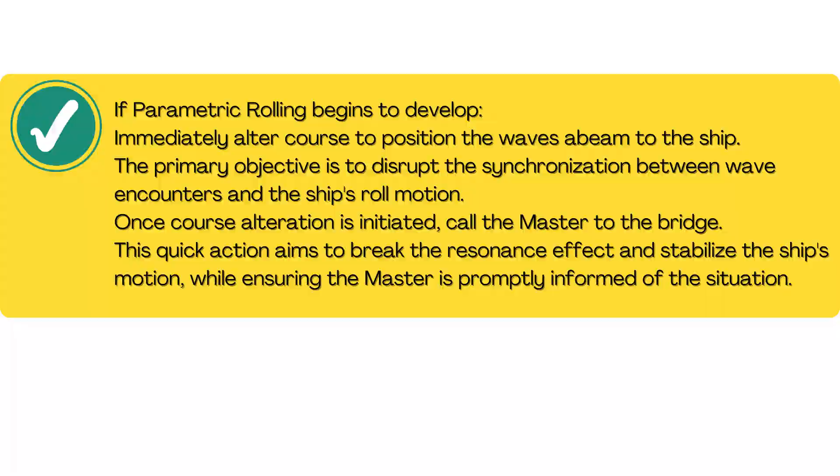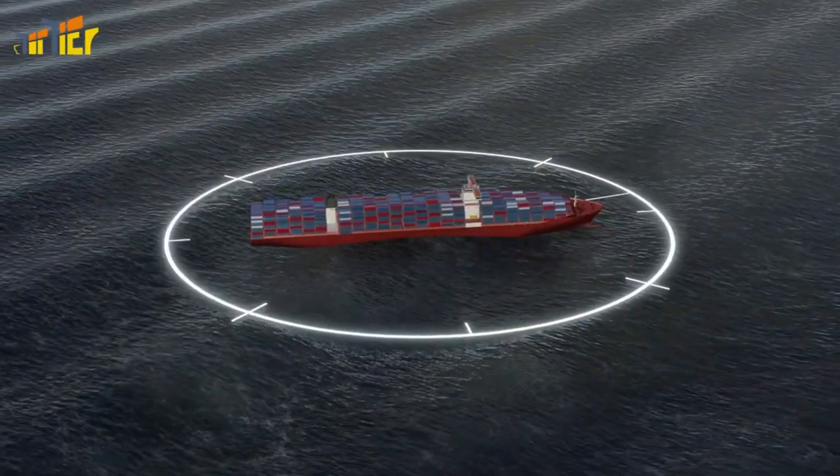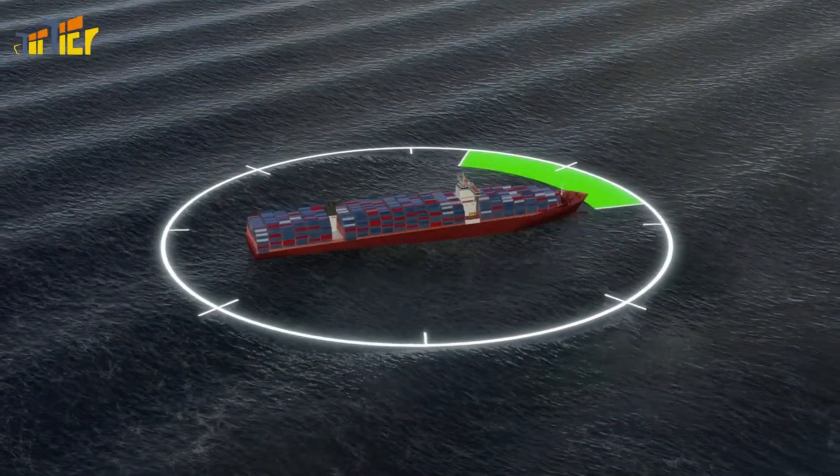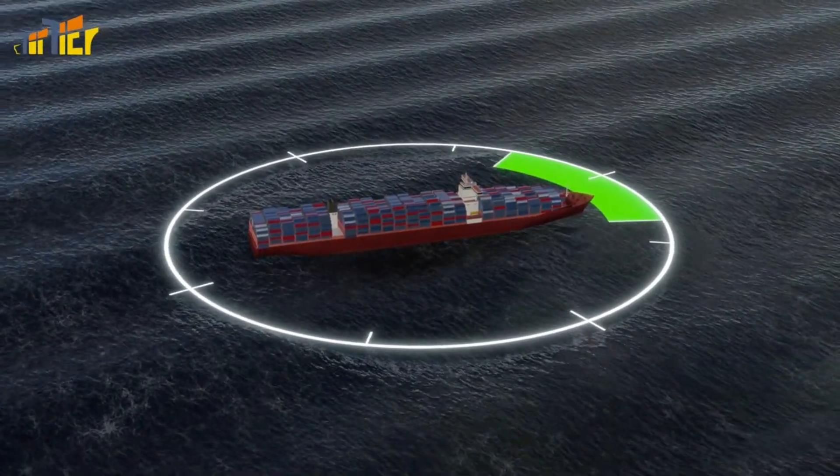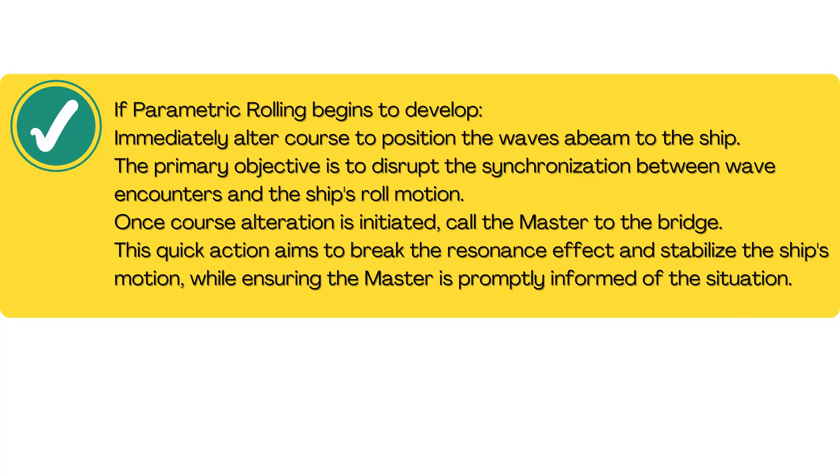If parametric rolling begins to develop, immediately alter course to position the waves abeam to the ship. The primary objective is to disrupt the synchronization between wave encounters and the ship's roll motion. Once course alteration is initiated, call the master to the bridge. This quick action aims to break the resonance effect and stabilize the ship's motion, while ensuring the master is promptly informed of the situation.